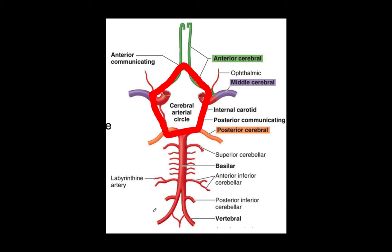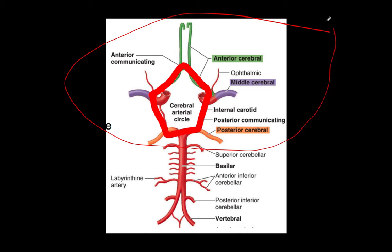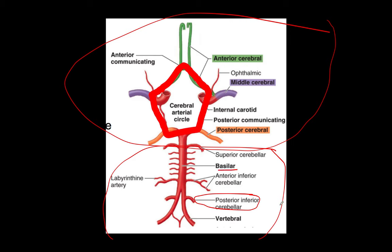Now we can talk about strokes. Here's our circle of Willis — be able to draw and label it. Now getting into Step 2, you should have a strong understanding of the posterior circle of Willis including the superior cerebellar, AICA, and PICA. PICA is super important for Wallenberg syndrome and lateral medullary syndrome. The basilar artery supplies all of the pons, medulla, and brainstem, which is why an infarct there produces locked-in syndrome.